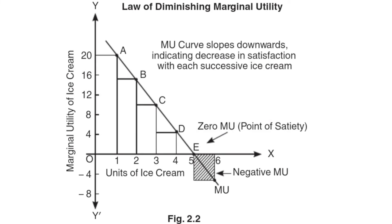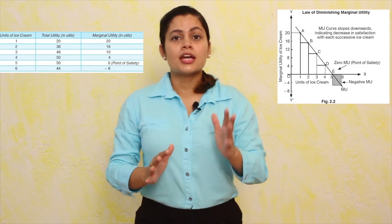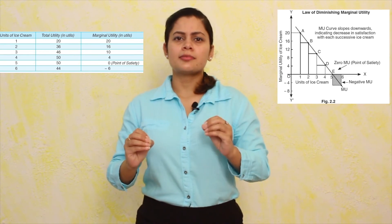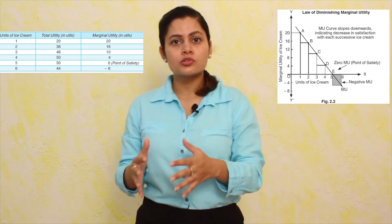To draw the marginal utility curve, we plot units consumed on the X-axis and marginal utility on the Y-axis. The resulting diagram is a downward-sloping curve. The point where marginal utility on the graph equals zero is called the point of satiety, or the point of maximum satisfaction, because at this point total utility is at its maximum. This is also known as Gossen's First Law.